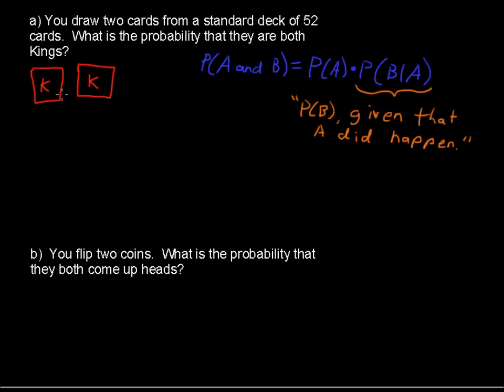In our case, event A is getting a king. So let's write that out. We have the probability that the first card is a king. We have four kings out of 52 cards, so the probability is 4 in 52. We can make that into a decimal right away. I'm not going to do that just yet, because I'm going to end up multiplying this.